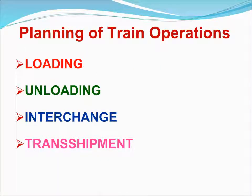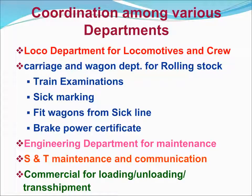Planning of train operations covers loading, unloading, interchange, and transshipment. Coordination among various departments includes: the loco department for locomotives and crew; carriage and wagon department for rolling stock, train examinations, sick marking, fit wagons from sick line, and brake power certificates; the engineering department for maintenance; S&T maintenance and communications; and commercial department for loading, unloading, and transshipment.